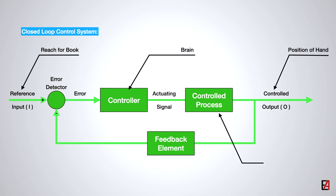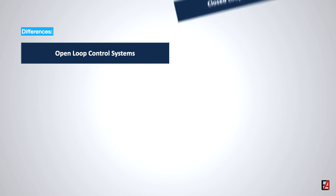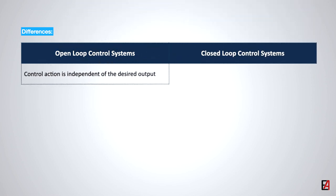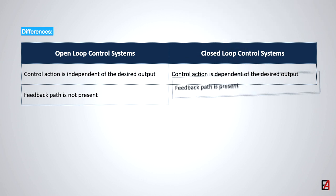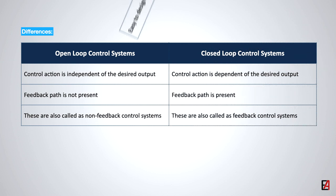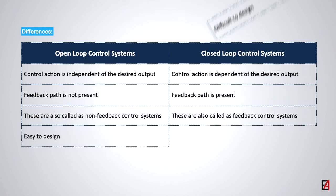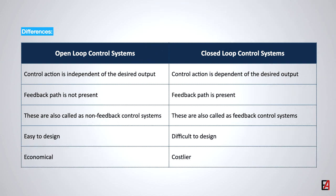The concept of feedback plays an important role in the closed loop control system. Without feedback, a control system would not be able to achieve the accuracy and reliability of complex systems. Some of the main differences between the two types are: open loop control systems are independent of the output as no feedback path is present, and are easy to design and economical, but very rarely used as they are inaccurate. On the other hand, closed loop control systems are dependent on the output as the feedback path is present, and are costlier and more difficult to design, but provide accurate results.